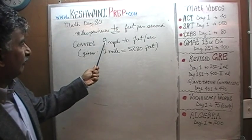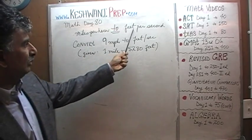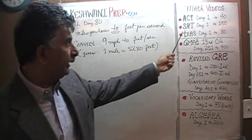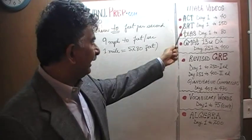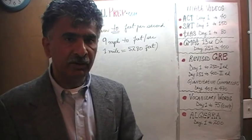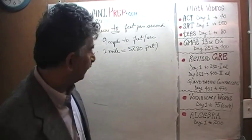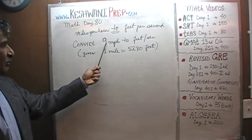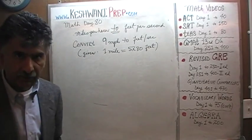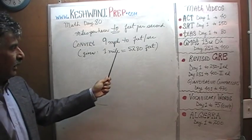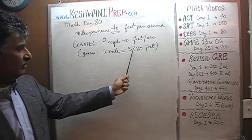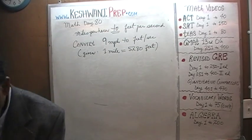to convert a given figure from miles per hour to feet per second. This sort of problem you might expect to find in any of these tests if you're preparing for ACT, SAT, TEAS, GMAT, or GRE. They will simply give you the speed in miles per hour and ask you to convert into feet per second. Of course, they will always tell you how many feet there are in a mile. Here we are told that one mile equals 5,280 feet. Let's get going.